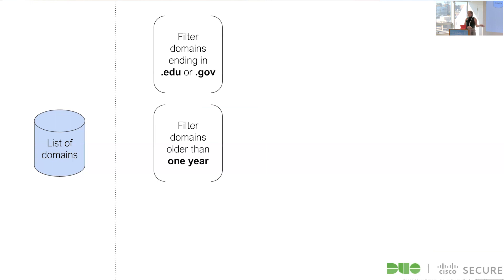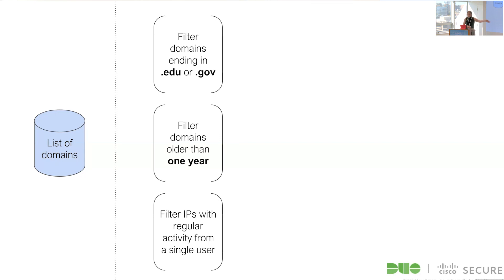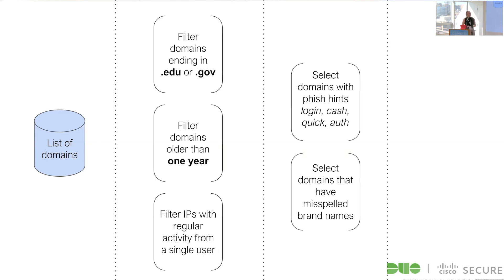We applied two simple filters first. We eliminated domains with 'edu' or 'gov' — we can trust those aren't phishing. We removed domains older than one year, since most phishing sites live for about 8 to 15 days. We also looked at user behavior behind the IP addresses: if an IP mapped to a domain but all the auths came from one or two users with very consistent behavior, that doesn't match the signature of a phishing attack, which is typically one-and-done. Then we searched for phish-hint keywords like 'login,' 'cash,' 'quick,' 'auth,' and for domains with misspelled brand names — one or two letters off.